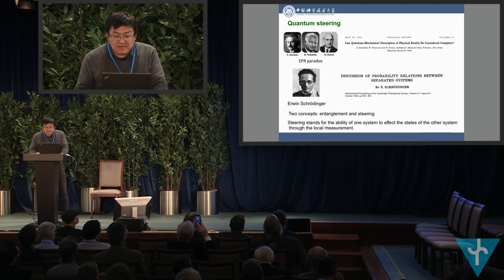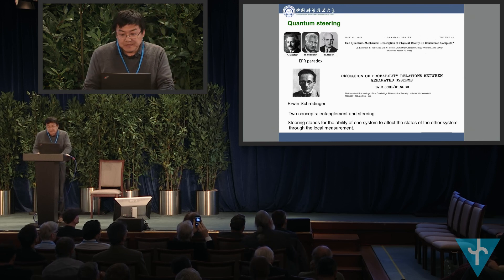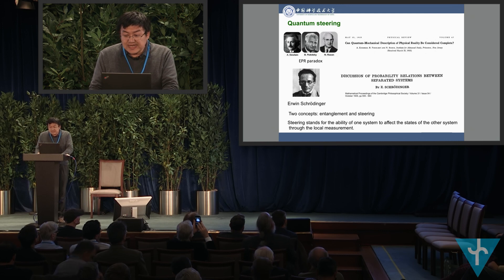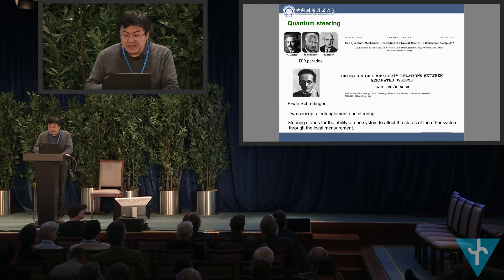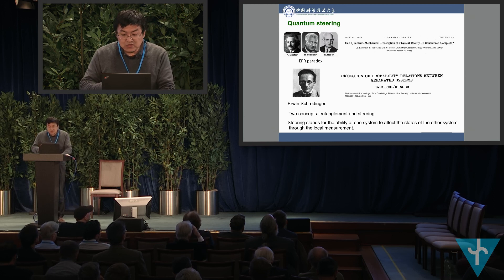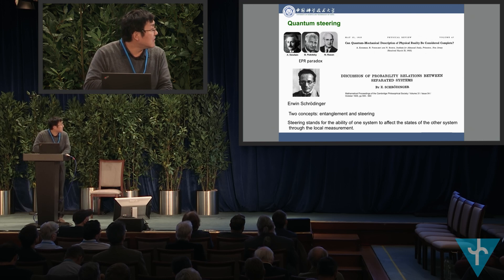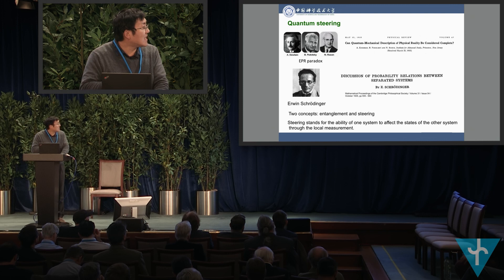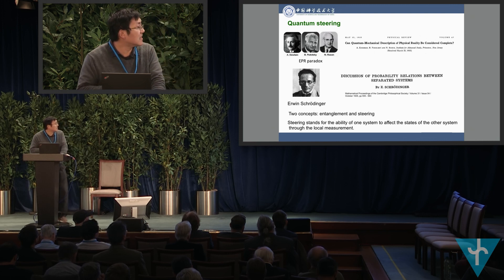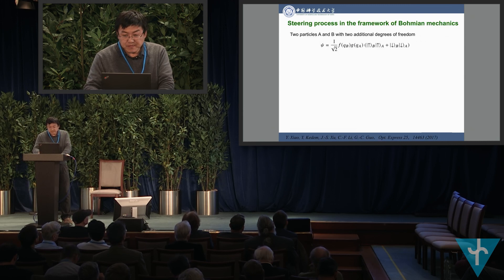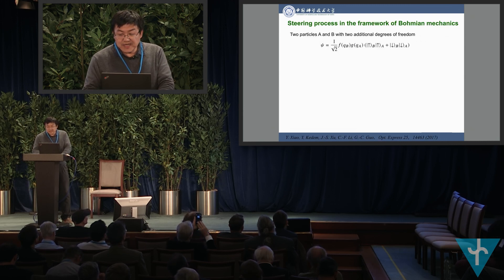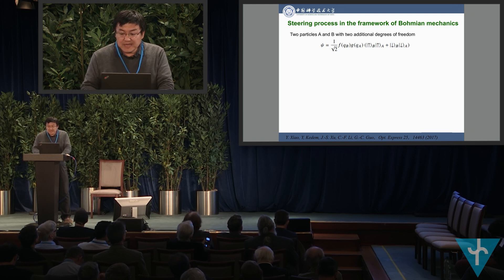Recently, the concept of quantum steering received great interest. It originated from the EPR paradox. When Schrödinger revisited the EPR paradox, he proposed two concepts: entanglement and steering. Steering stands for the ability of one system to affect the state of the other system through local measurement. In our experiment, we demonstrated the steering process in the framework of Bohmian mechanics.